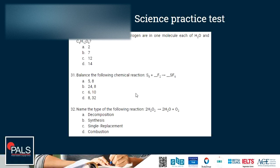Question 32: name the type of reaction for 2H₂O₂ → 2H₂O + O₂. We have one reactant on the left forming two products — this is a decomposition reaction. To decompose means to break down. The opposite would be a synthesis reaction, where two or more simple molecules combine to form one more complex molecule. Single replacement and combustion reactions don't apply here, so the correct answer is A: decomposition.